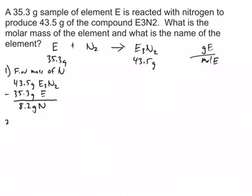The second thing we're going to do is find the moles of our element E. We already know the grams, that's 35.3. So if we find the moles, then we just divide, and we're basically done.